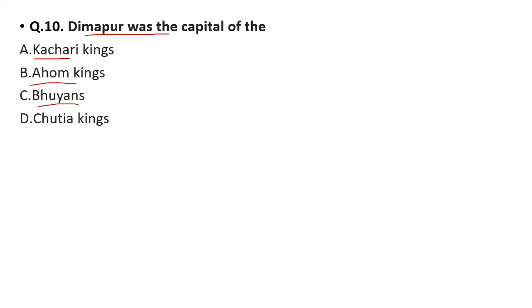Question 10: Dimapur was the capital of — option A: Kachari kings, option B: Ahom kings, option C: Bhuyans, option D: Chutia kings. The correct answer is option A, the Kachari kings.